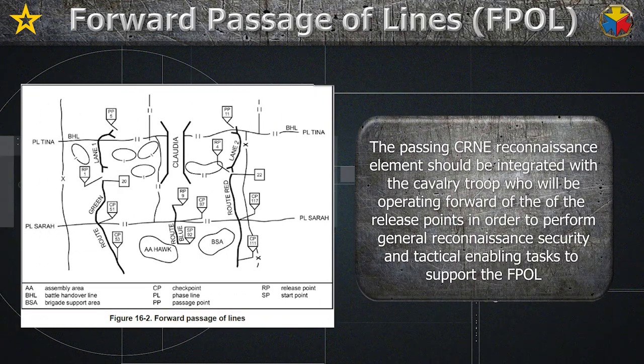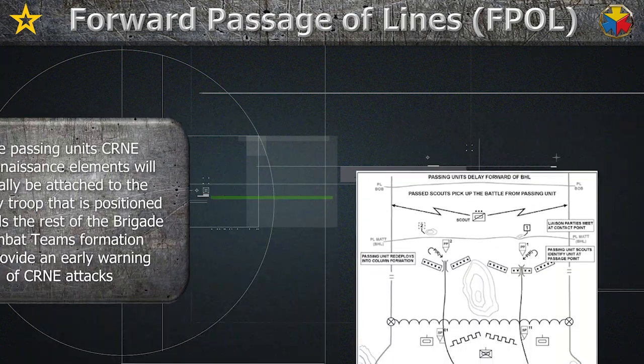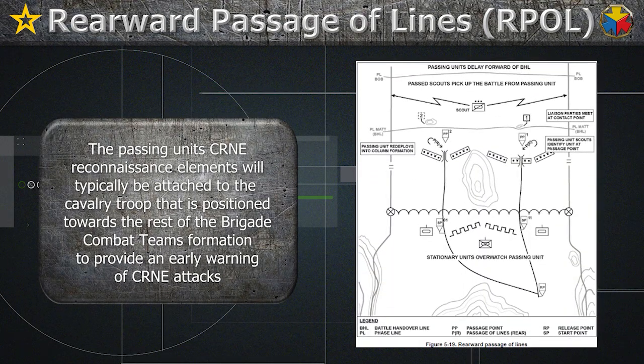For FPOL, the passing unit's CBRN reconnaissance element should be integrated with the cavalry troop operating forward of the release points, to perform general reconnaissance, security, and tactical enabling tasks to support the FPOL. For RPOL, the passing unit's CBRN reconnaissance elements will typically be attached to the cavalry troop positioned towards the rear of the brigade combat team's formation to provide early warning of CBRN attacks.